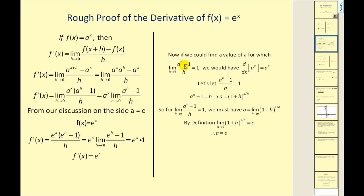We take that special case and ask: what would a have to be for this limit to equal one? If we assume it equals one, solve for a to the h, and raise both sides to the power of one over h, we get a equal to that expression. We can conclude that a equals this limit, and by definition this limit is equal to e. So when a equals e, the derivative of e to the x is equal to e to the x.